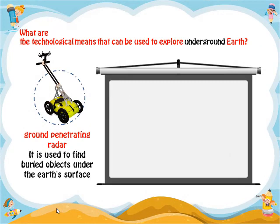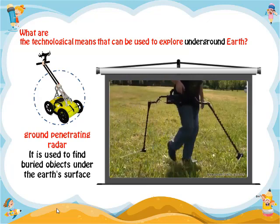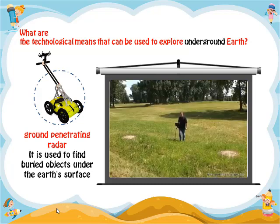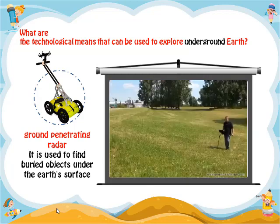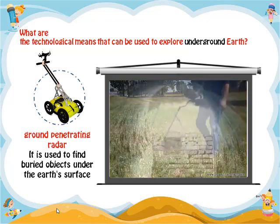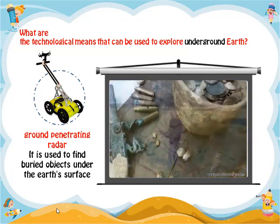Ground Penetrating Radar, GPR: this device is used to detect objects buried in the ground using radar. The Gephardt GPR from OKM is used to locate underground objects and structures to depths of 40 meters. As a treasure hunter, you can find chamber tombs, buried treasure caches like chests, or other items of great value.